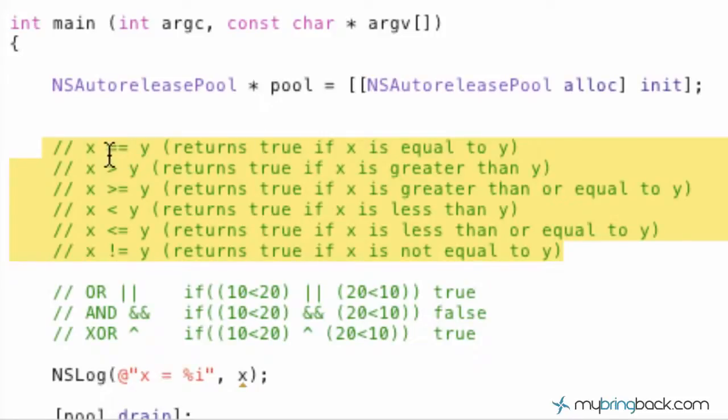Starting at the top we've got x equals equals y which basically returns true if x is equal to y. So, if x was 10 and y was 10, then it would return true in that case. If x was 10 and y was 9, it would return false instead.